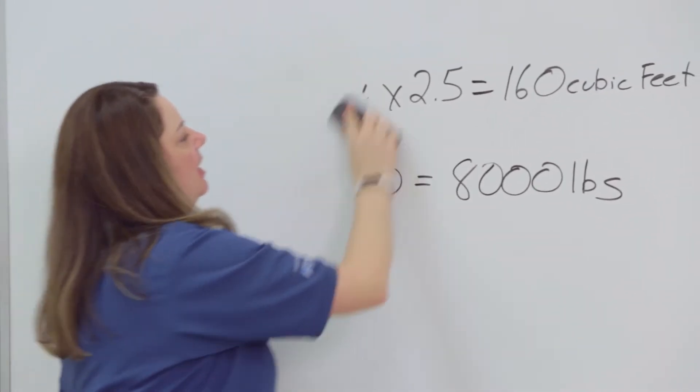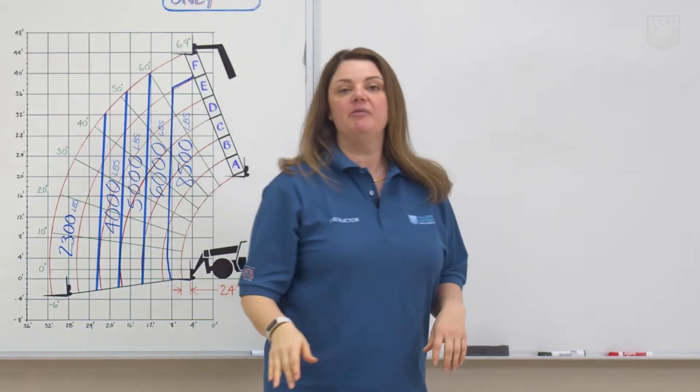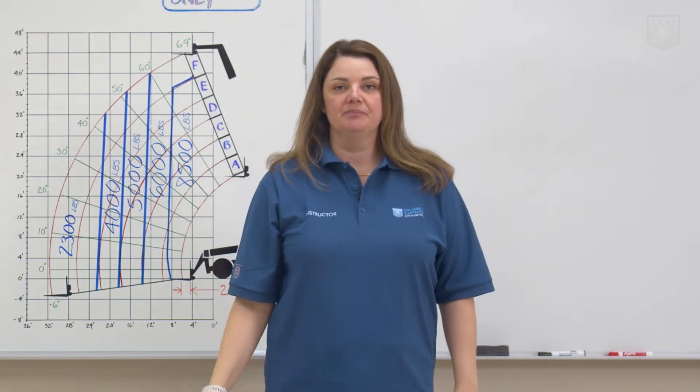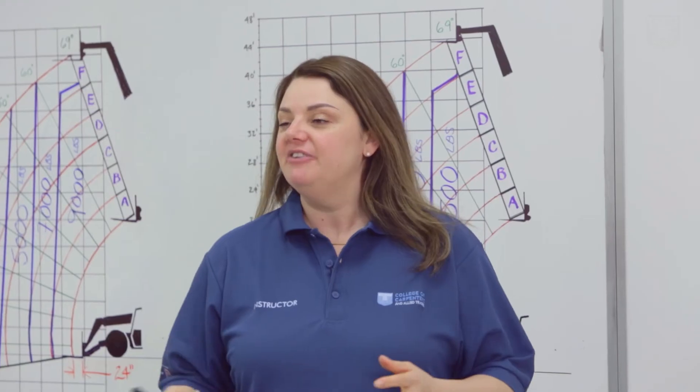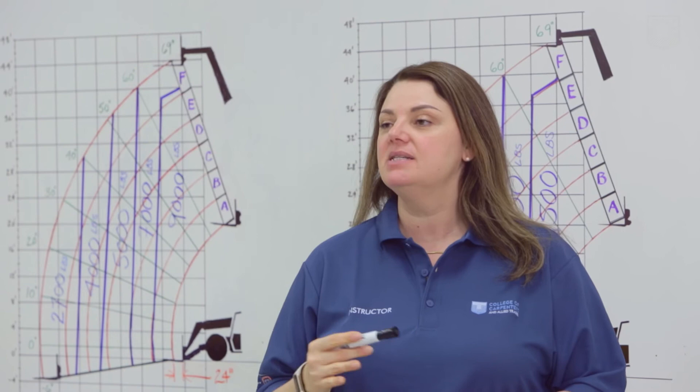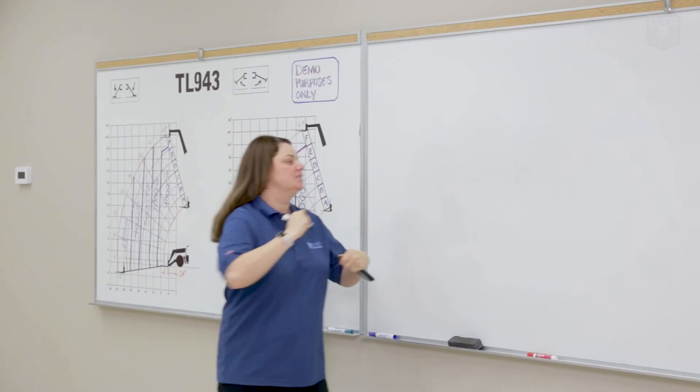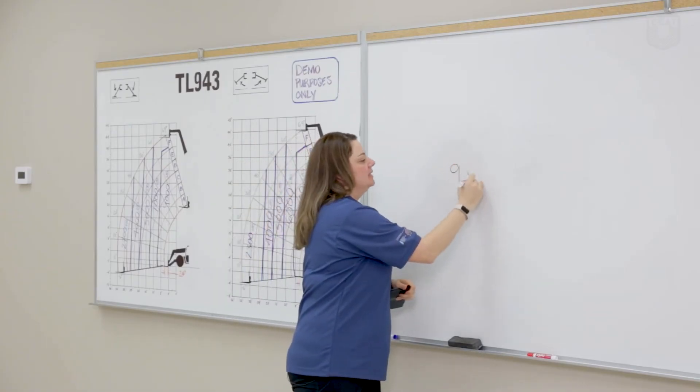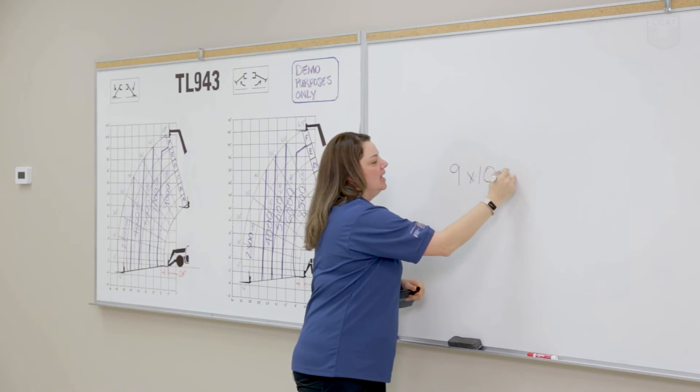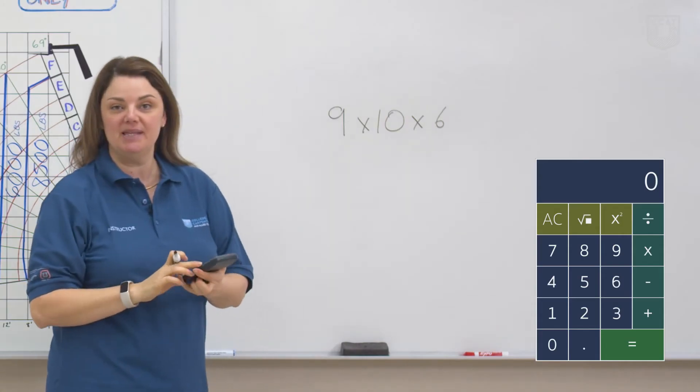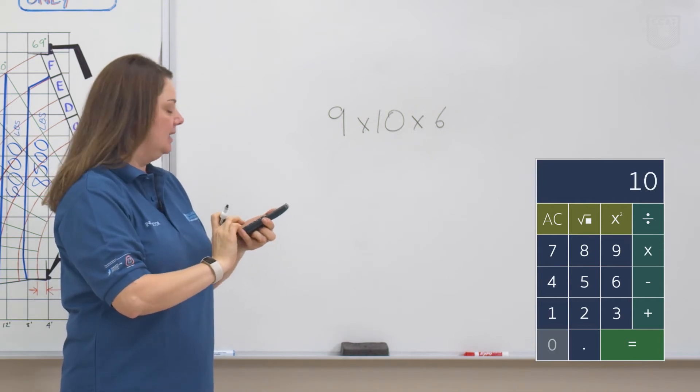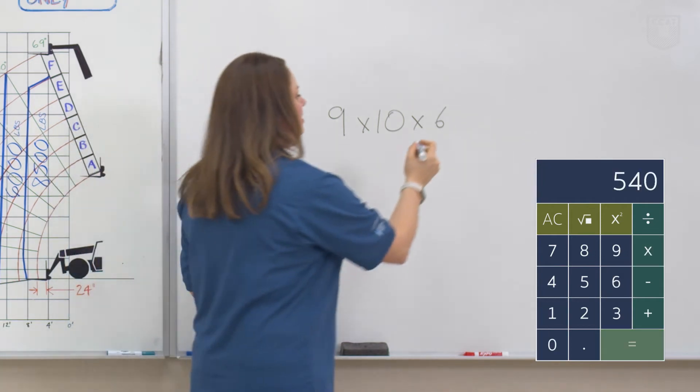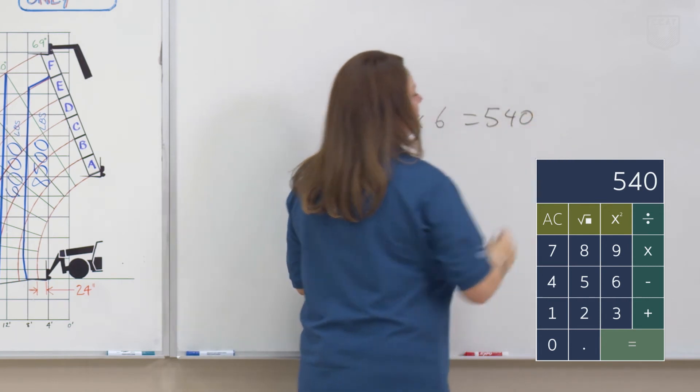In our next example, a foreman is asking us to lift a skid of bricks onto the third floor of a building that's under renovation. He tells us that a brick weighs approximately 5 pounds. To figure out how many bricks we have, we're going to do length times width times height. So we know that it is 9 rows by 10 rows by 6 rows high. We're going to multiply these numbers together, 9 times 10 times 6, to get our total of 540 bricks.